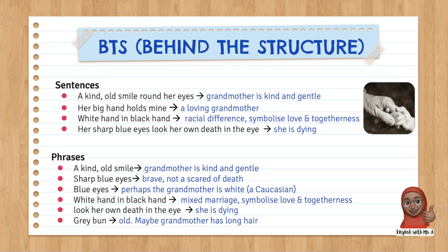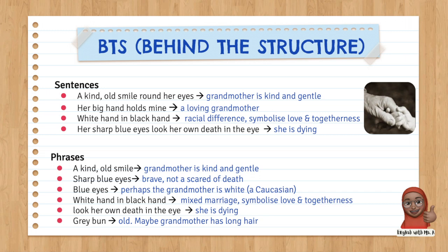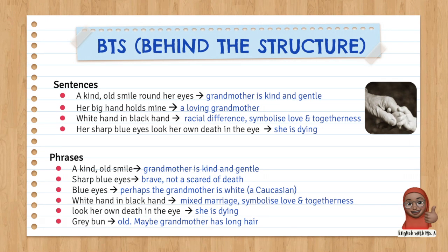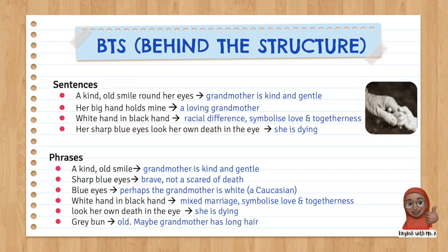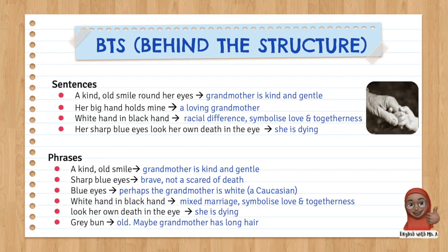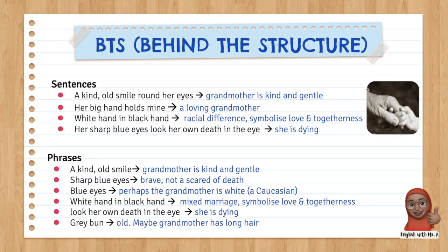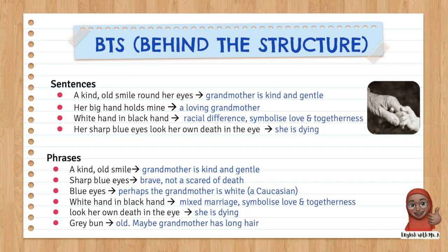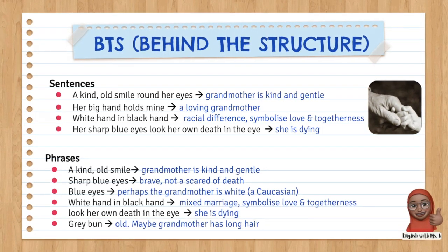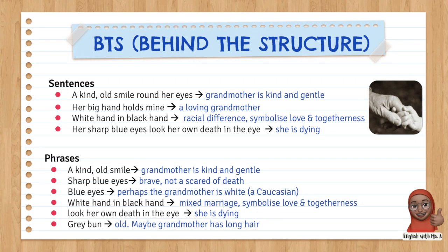'A kind old smile around her eyes' — grandmother is kind and gentle. 'Her big hand holds mine' — she is a loving grandmother. 'White hand in black hand' — it shows racial differences, a mixed marriage in the family. It symbolizes love and togetherness; even though they are from different races, they are loving and affectionate to one another. 'Her sharp blue eyes look her own death in the eye' — she is dying.